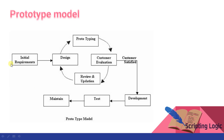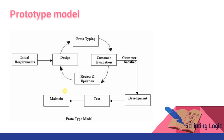Let's see the diagram. In the initial requirement phase we take requirements from the customer, then we prepare a design — a prototype — and show it to the customer. The customer evaluates it, gives us reviews, and asks for additions if any. Then the design and prototyping is revised. Once the customer is satisfied, we start development — that is coding — followed by testing and then the maintenance phase. If after release the customer wants any changes or if bugs remain, that is handled in the maintenance phase.